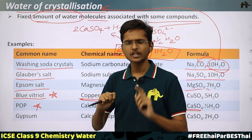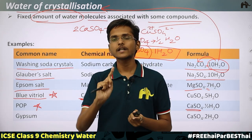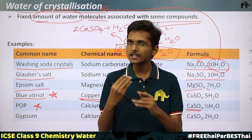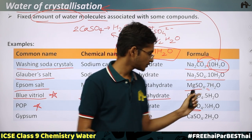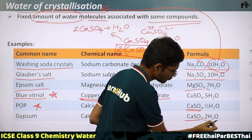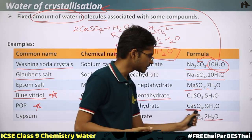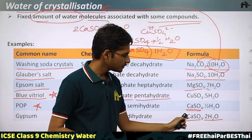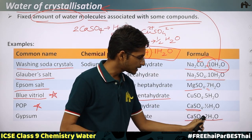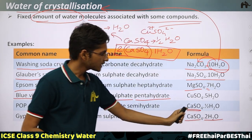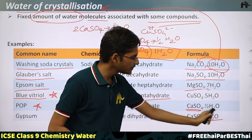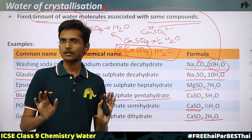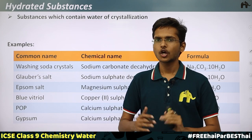For gypsum, there are two water molecules associated with one molecule of calcium sulfate: CaSO₄·2H₂O. So the name is calcium sulfate dihydrate. Plaster of Paris is calcium sulfate semihydrate, while gypsum is calcium sulfate dihydrate.